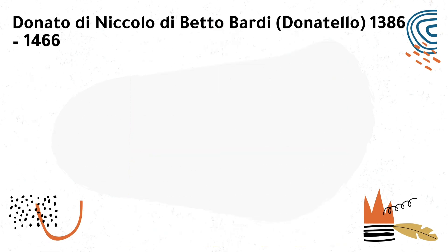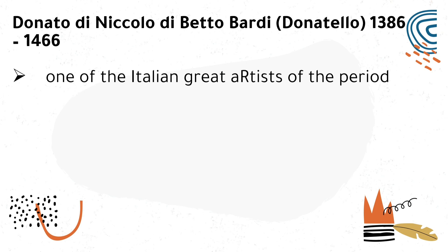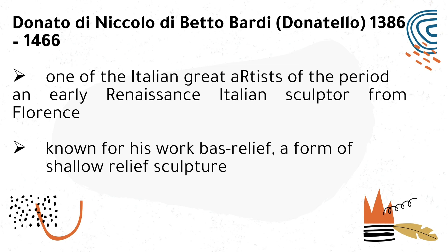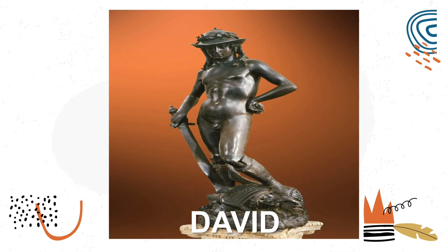The next artist is Donato di Niccolò di Betto Bardi, also known as Donatello. He was one of the great Italian artists of the period and an early Renaissance Italian sculptor from Florence. He is known for his work in bas-relief — a sculpture technique in which figures or design elements are just barely more prominent than the flat background. His work David represents a symbol of strength and hope; Donatello's David is much younger than Michelangelo's with prominent muscles and a clear sense of masculinity.